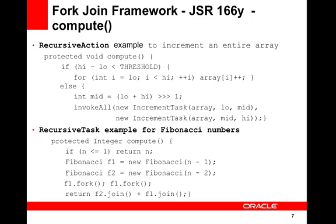Notice that a recursive action doesn't return a value — it's just an action performed repeatedly. Whereas a recursive task is used when you want to return a value: you split things up, fork them, and then join them on return. This is especially effective when splitting a task into smaller and smaller subtasks down to a base case. Which one you use depends on your requirements.